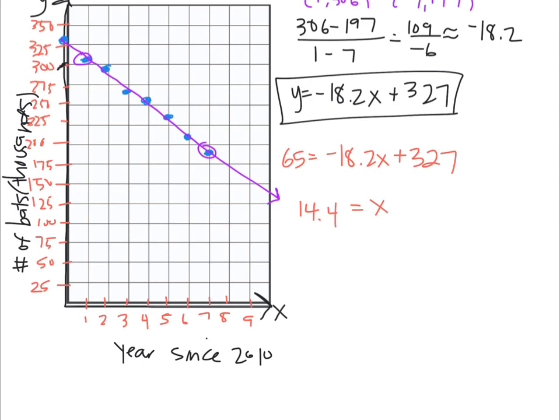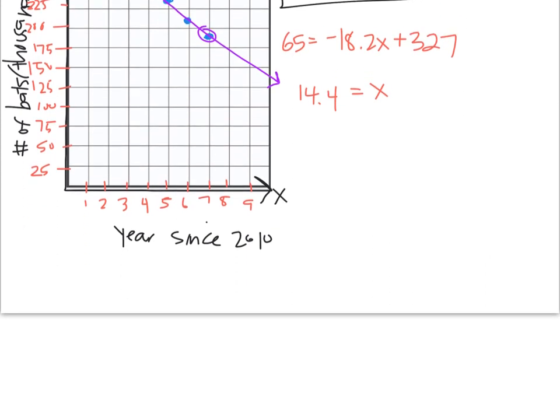So I got approximately 14.4. It was a weird decimal. And I know I just told you that we'd be all done, but 14 isn't the year. It's the number of years since 2010. So we do have one more step to do. If zero represents 2010, how many years, or what year is it 14.4 years after 2010? And that would be the year 2024. So that's the year when the bats will be 65,000.